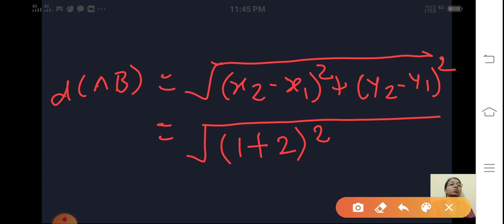So (1 plus 2) the whole square plus, then y2 is 5 minus y1 is 1. So 5 minus 1, right.